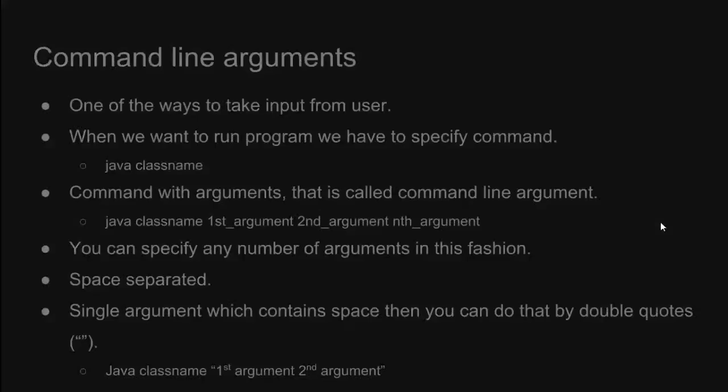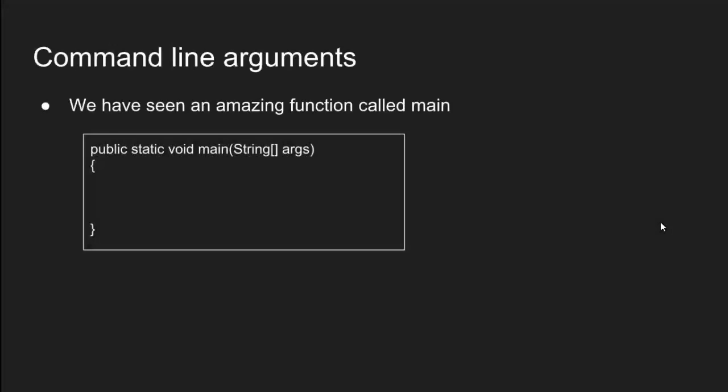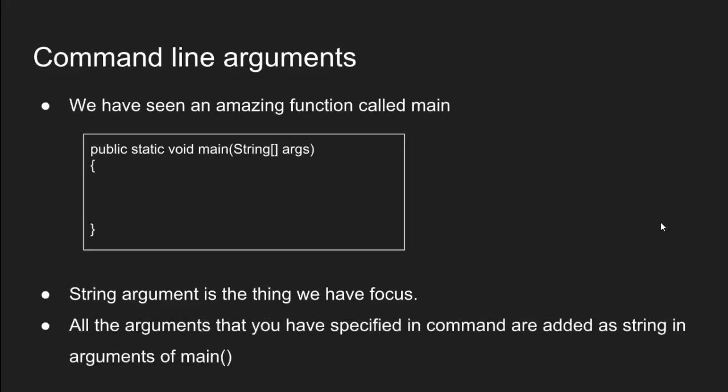Now we know how to provide command line arguments to the program, but the question comes to mind: how do we use them in programs? We have seen an important function called main. Let's recall its syntax: public static void main string arguments. In this syntax, string arguments is the thing we have to focus on. All the arguments that you have specified in the command are added as strings in the arguments of the main function.